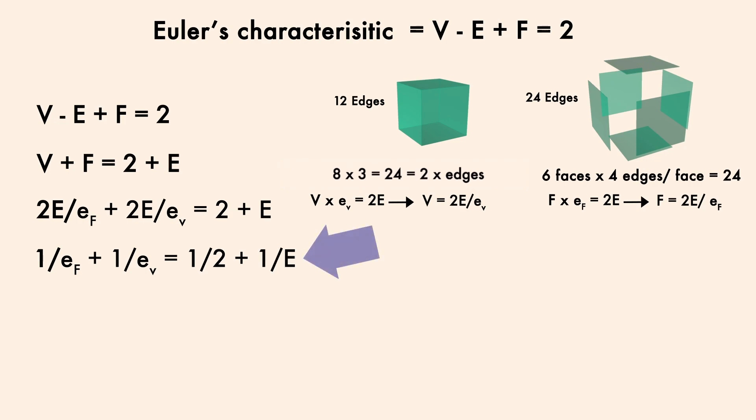Now the total number of edges of course has to be positive, which means that this left side of the equation must be greater than 1 half. Then remember, e_f is the number of edges on each face, so like for triangles that'd be 3. But we can't go any lower than 3, or else we wouldn't have a two-dimensional shape for a face.